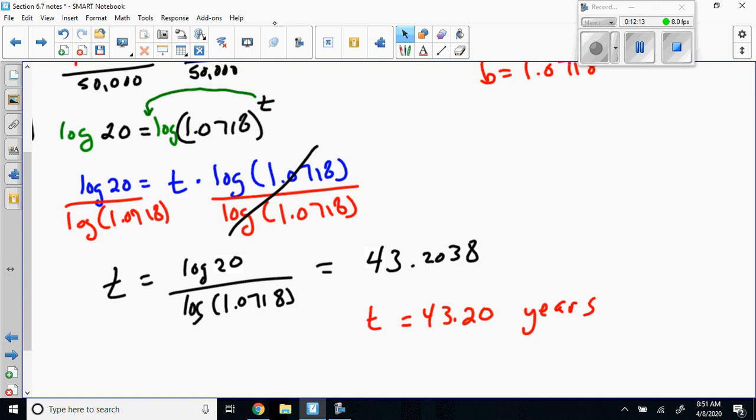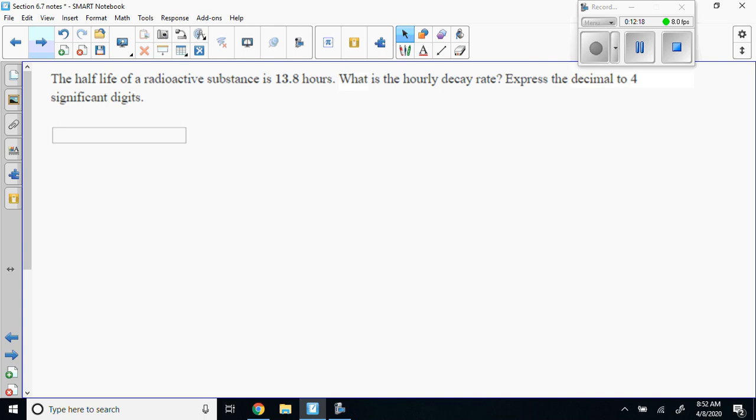The half-life of a radioactive substance is 13.8 hours. What is the hourly decay rate expressed to four decimal places? They're wanting k because they are going back to this equation where you've got y equals a sub zero e to the kt.